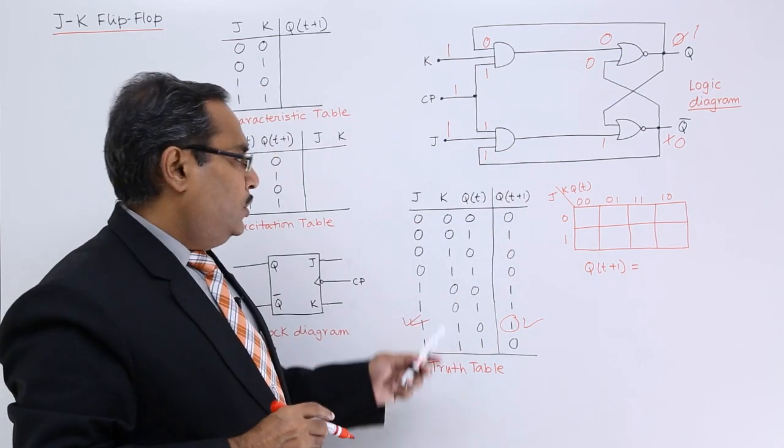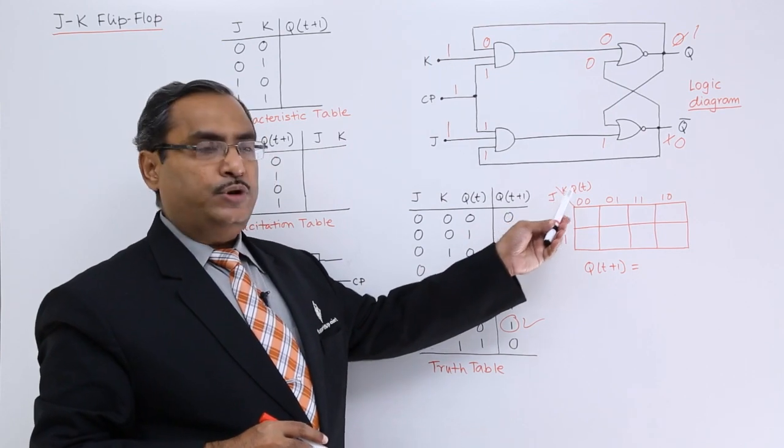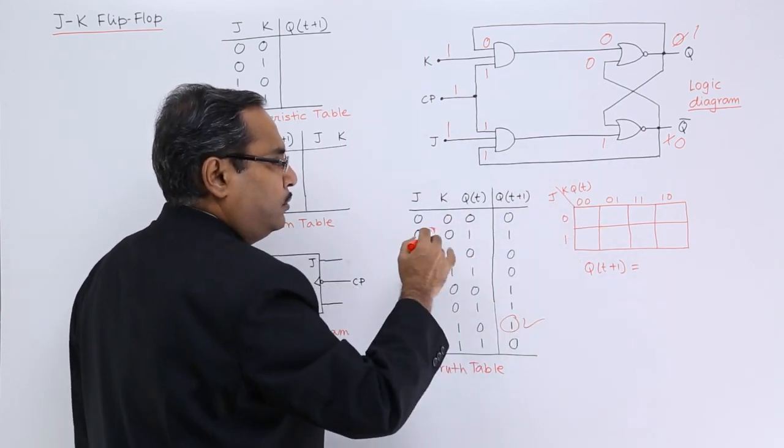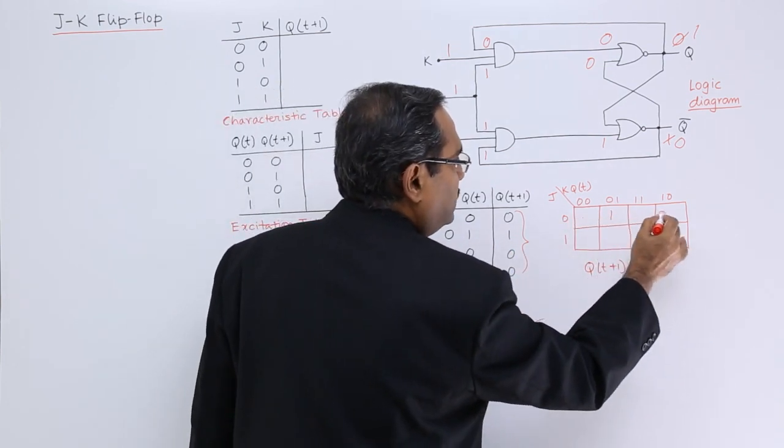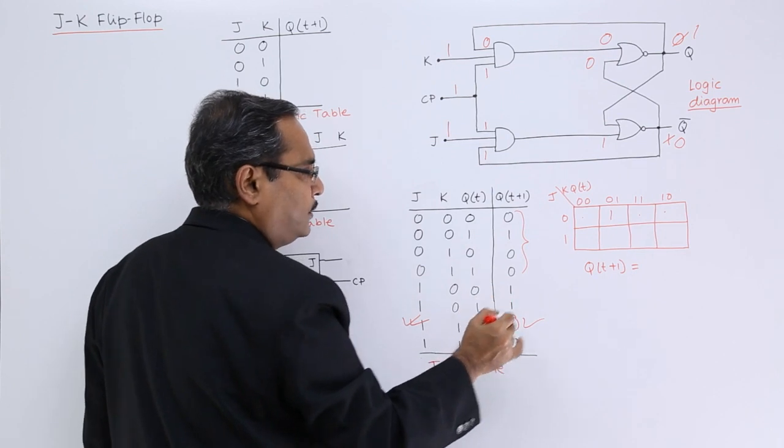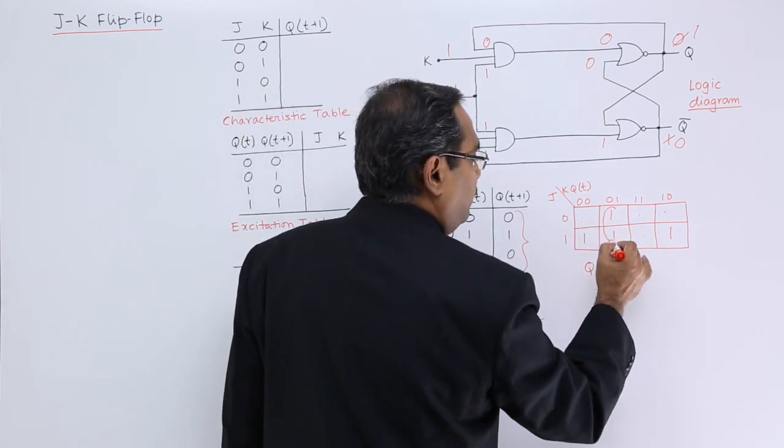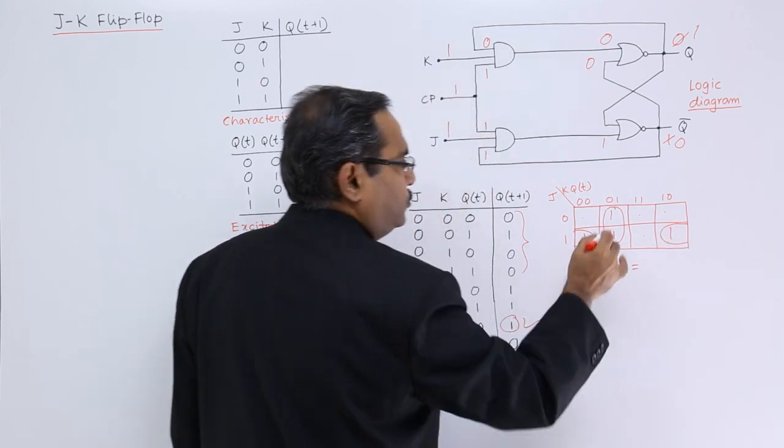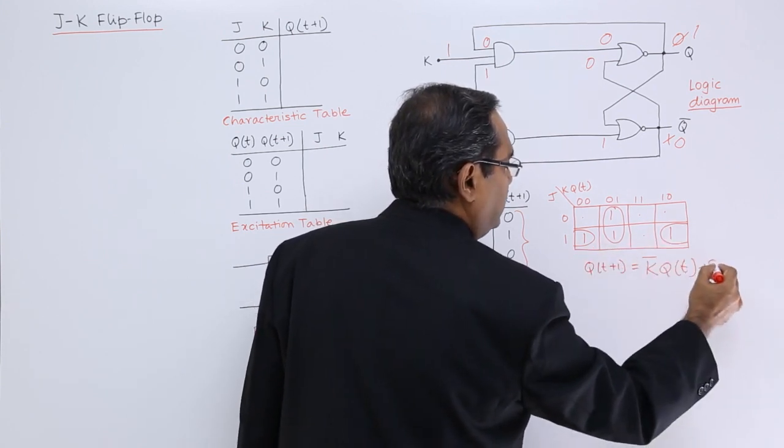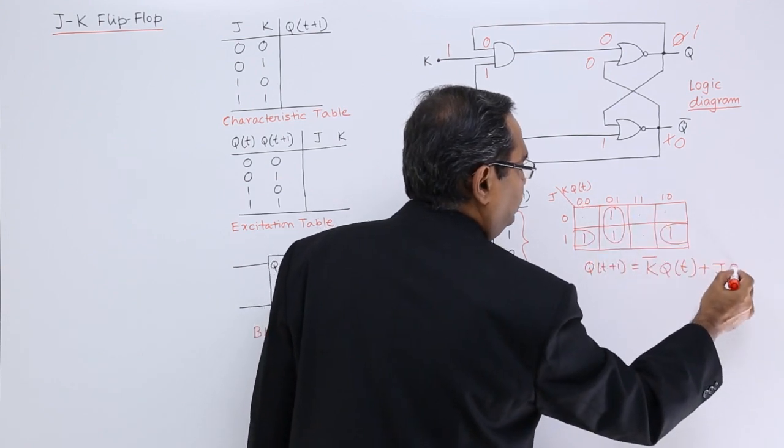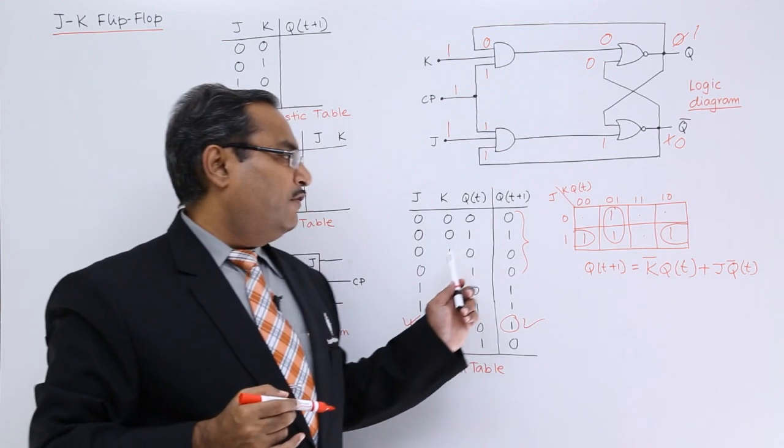Now let us have the characteristic equation. I am plotting this Q(t+1) on this 3 variable Karnaugh map. Here we are having J and K and Q(t). Now all of them are in the same sequence. I am going for 4 here. 0,1,0,0 and 0,1,0,0. Here we are having 1,1,1,0 and 1,1,1,0. I am finding this. Here I will be getting 1 cover and another cover will be this one. Ultimately it is nothing but K bar Q(t) and this one is J and the last one is Q bar(t). In this way we have got the characteristic equation of JK Flip-Flop from this truth table.